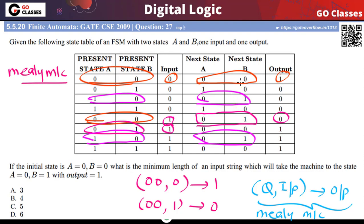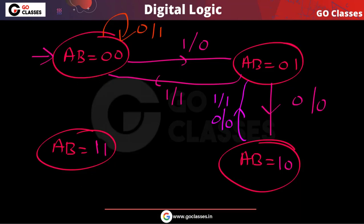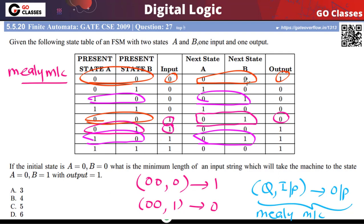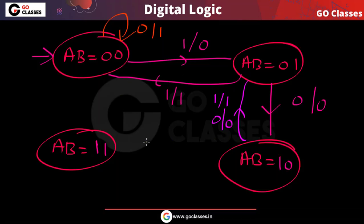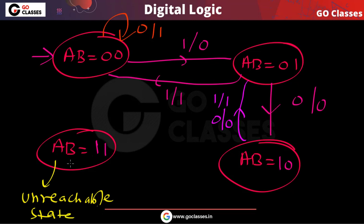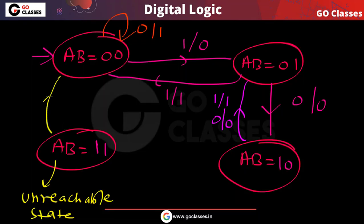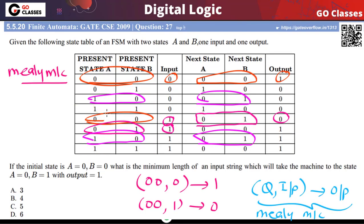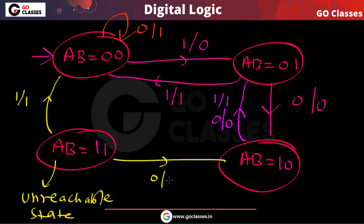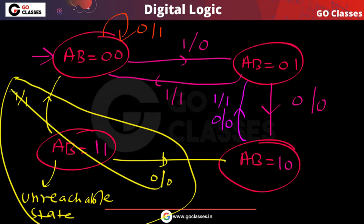Now, what about state 1,1? You can notice that no state transitions go to state 1,1. Since the initial state is 0,0, and from 0,0 you only go to 0,0 or 0,1, and from 0,1 you go to 1,0 or 0,0, state 1,1 is unreachable. You can remove it from the diagram and don't need to worry about its transitions.